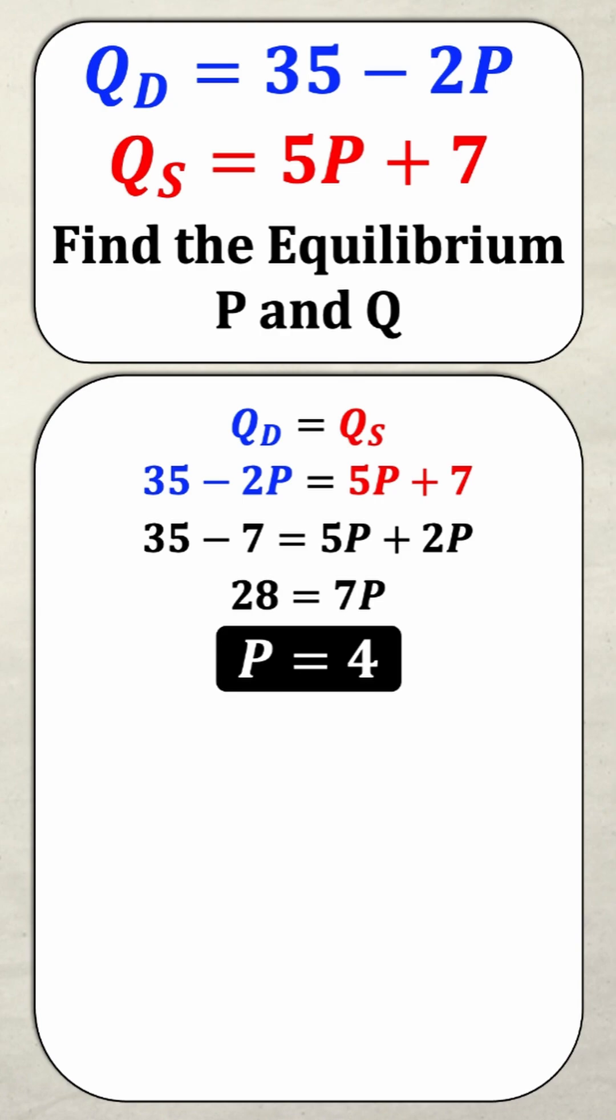Now my next step is to find the equilibrium quantity. And to do that, I substitute the price into the quantity demanded or the quantity supplied equation. It doesn't matter which one, it's going to be the same value. I'm going to substitute it into the demand equation in this example.